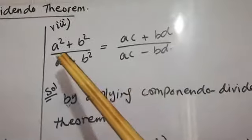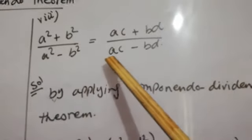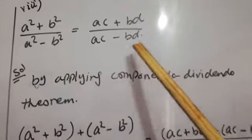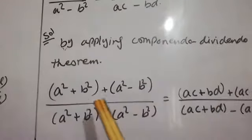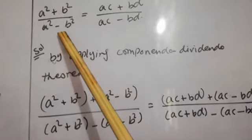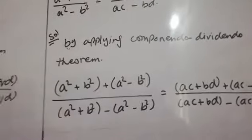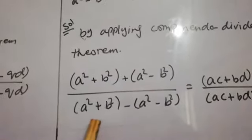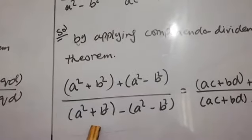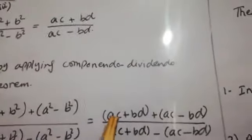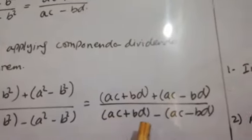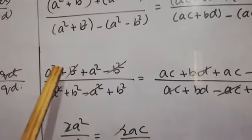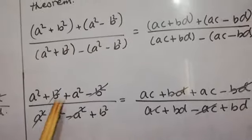The last part of this question: A squared plus B squared divided by A squared minus B squared equals AC plus BD divided by AC minus BD. We again apply the Componendo Dividendo theorem. We write A squared plus B squared plus A squared minus B squared in the numerator, and A squared plus B squared minus A squared minus B squared in the denominator, and similarly AC plus BD plus AC minus BD and AC plus BD minus AC minus BD on the right side.